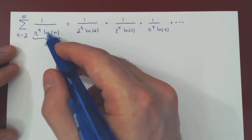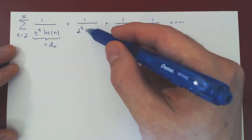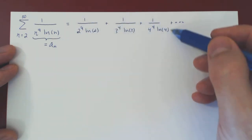we have 1 over n to the 4, ln of n. Now this goes to infinity, so 1 over it shrinks to 0. So we are adding smaller and smaller and smaller positive terms.